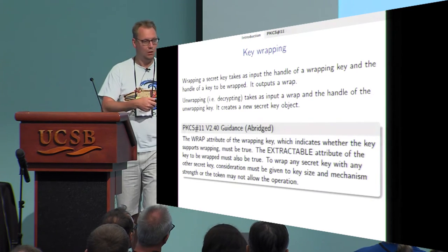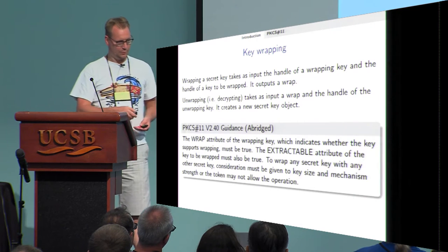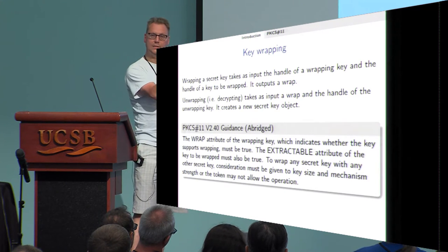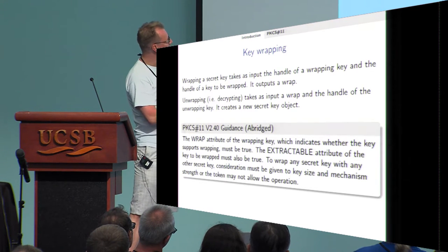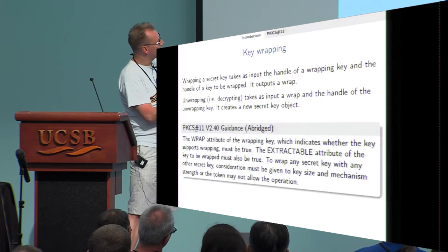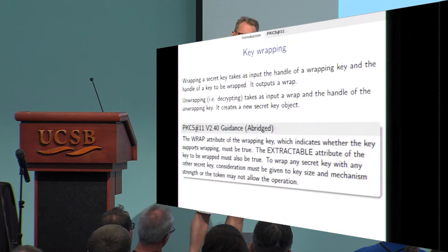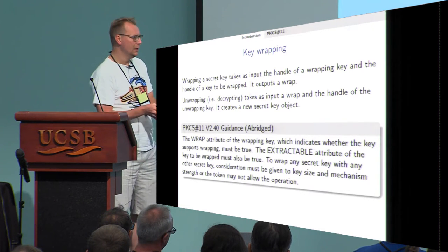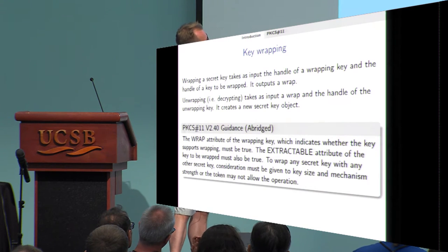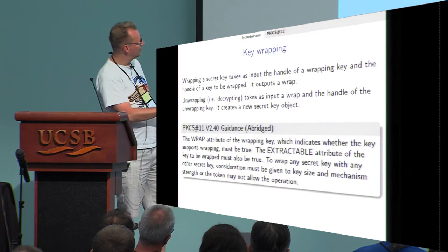These associated data are excellent mechanisms to help authenticate attributes when you transport keys, and we show this works the way you'd like. Some guidance on using attributes: if you wrap, the extractable attribute should be set to true; if it's not, the operation is not allowed and the token will refuse. Also, when wrapping any secret key with another, consideration must be given to key size and mechanism strength. In concrete security, people typically fix on a particular key length, whereas here you need to deal with multiple key sizes simultaneously — an abstraction difficulty we address.